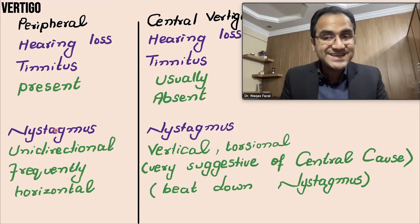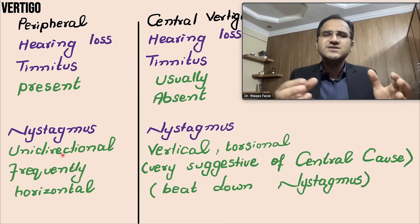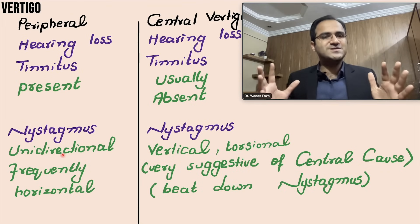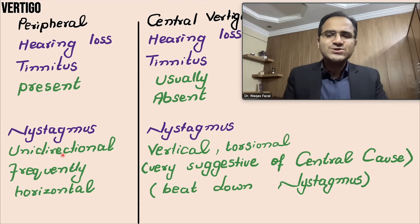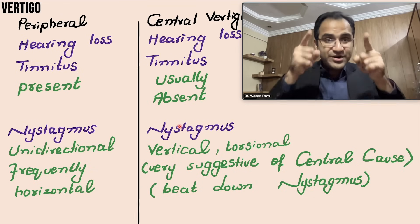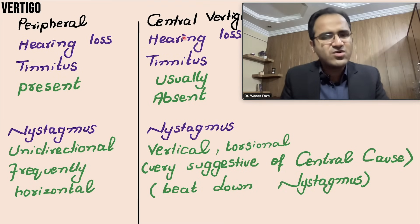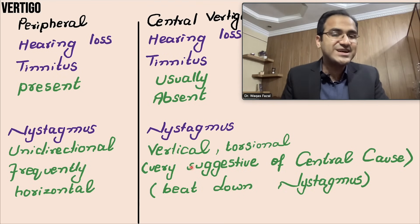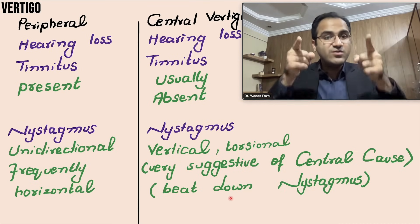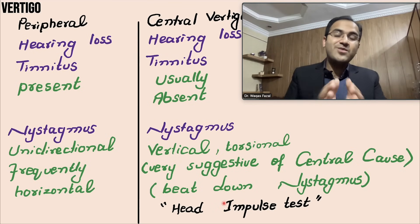Regarding nystagmus: if the nystagmus is unidirectional and horizontal, it is reassuring and most likely indicates a peripheral cause. However, if the nystagmus is vertical or torsional — called beat-down nystagmus — this is highly suggestive of a central cause.